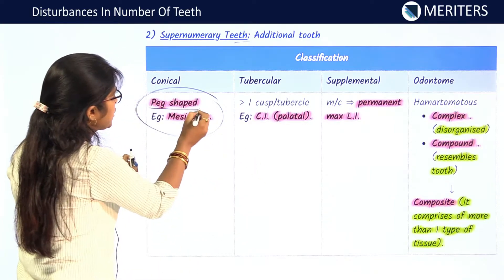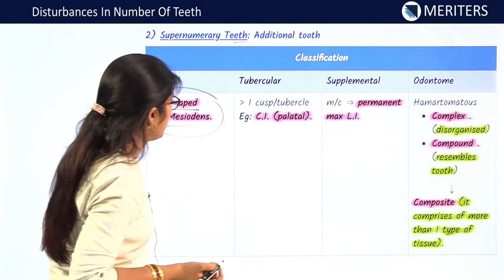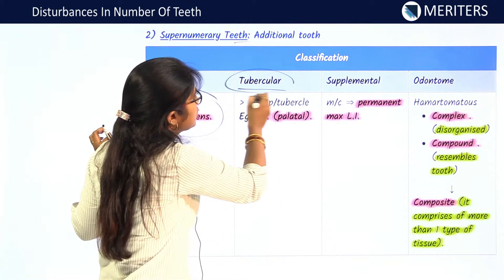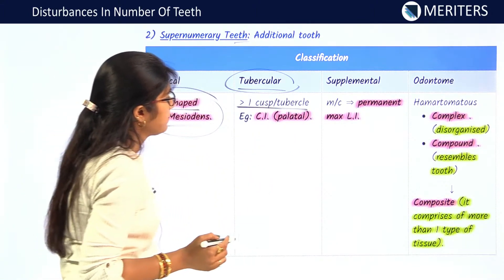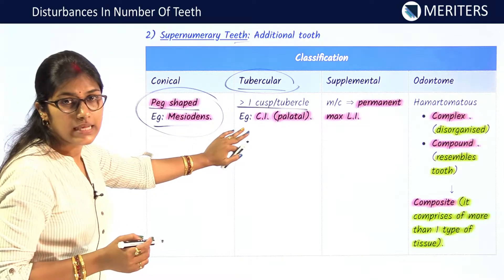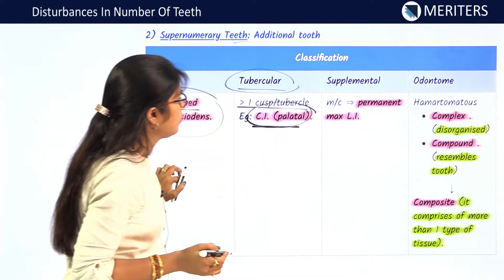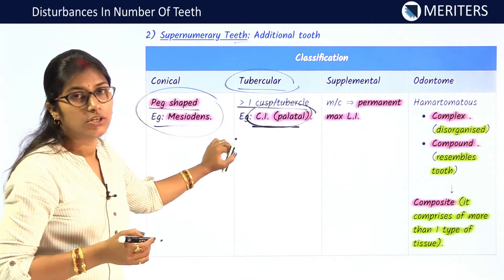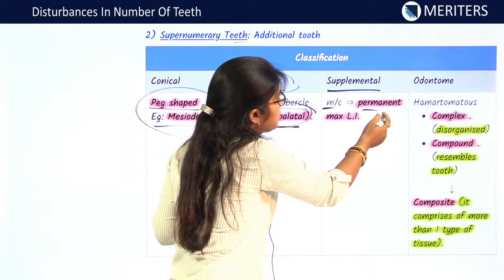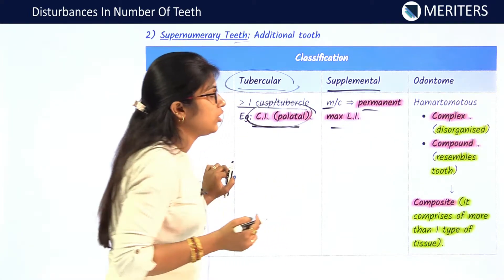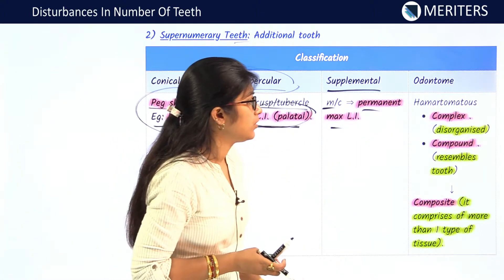The conical type — mesiodens is a supernumerary tooth that is peg-shaped and represents the conical type. Tubercular supernumerary teeth have more than one cusp or tubercle; an example is a tooth palatal to the central incisor. The supplemental type — the most common example is the permanent maxillary lateral incisor.